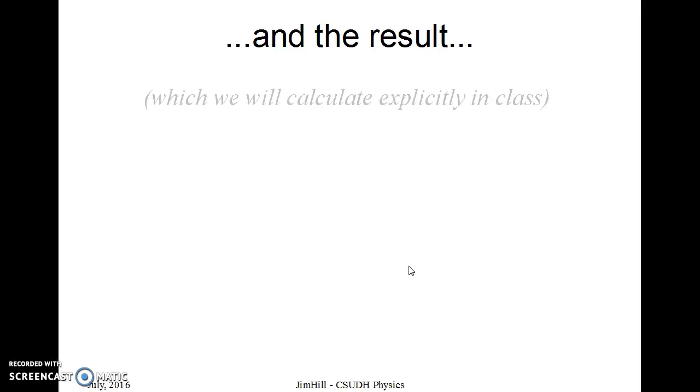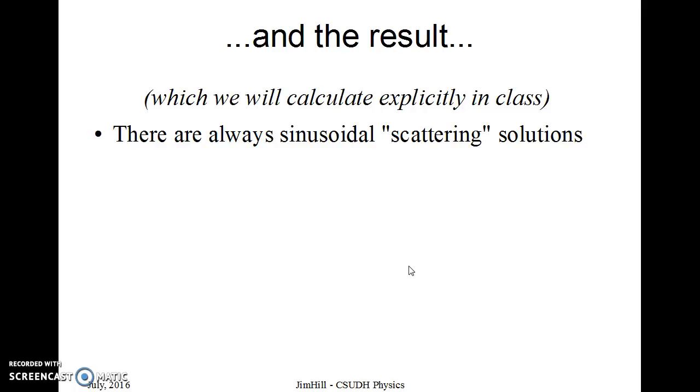but the boundary condition on the derivative is not continuity, it's a specific discontinuity. In fact, we're going to go through this in detail and calculate it in class, but I want to tell you what's going on generically. There are always sinusoidal scattering solutions, that is those solutions with the energy greater than the potential, so greater than zero in this case. The difference is there's a phase shift at this boundary, which in the case I just talked about was at x equals zero.